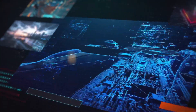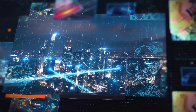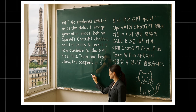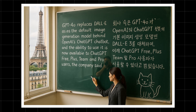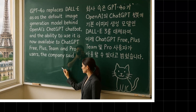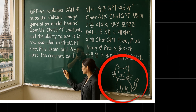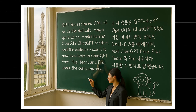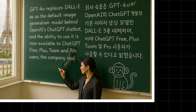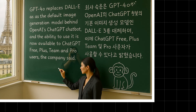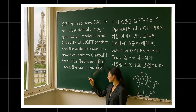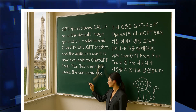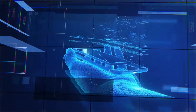What's even more exciting is GPT-4o's ability to support multi-turn interactions. For instance, after generating the image, you can simply type 'replace the cat on the chalkboard with a monkey.' GPT-4o will edit the existing image while keeping the teacher's appearance, outfit, and background unchanged. This showcases its advanced contextual understanding and ability to refine generated content in real-time.